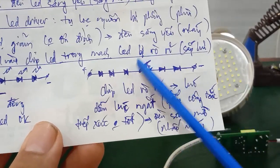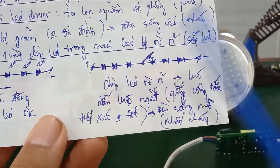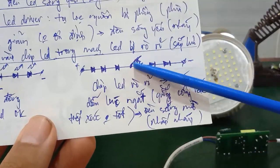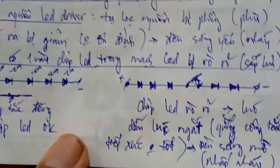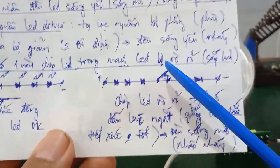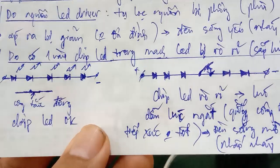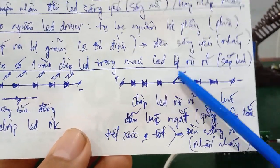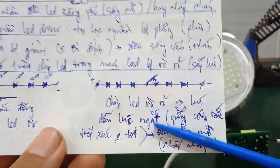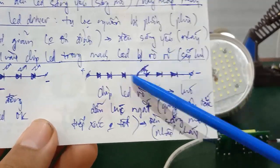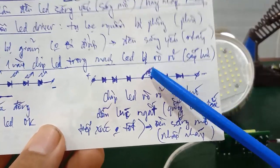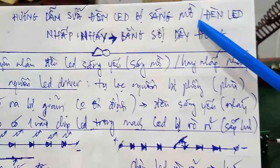Khi con chip LED bị rò rỉ, nó giống như công tắc đóng ngắt liên tục — nhấp nháy. Trường hợp thời gian đóng ngắt dài hơn thì gây ra hiện tượng nhấp nháy rõ hơn. Còn nếu đóng ngắt nhanh thì đèn LED bị sáng mờ. Đây chính là hai hiện tượng do chip LED rò rỉ gây ra.